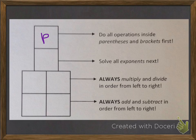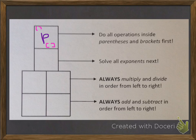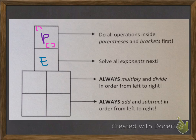We put a P in the first box for parentheses and brackets. If you're visual like me, drawing those symbols in there is going to help you recognize what you're looking for first. Next we solve all the exponents, so put a little E in there for exponent, and maybe an example of what an exponent looks like, so you know that's what you're looking for in this step.